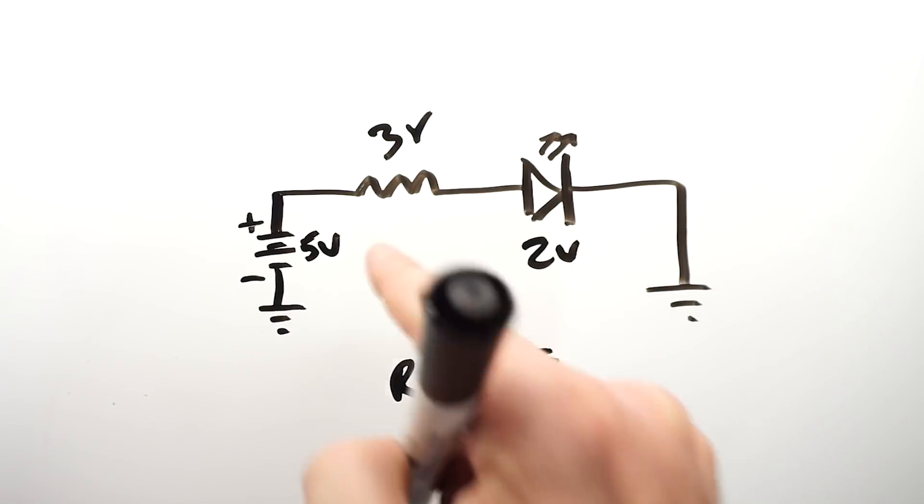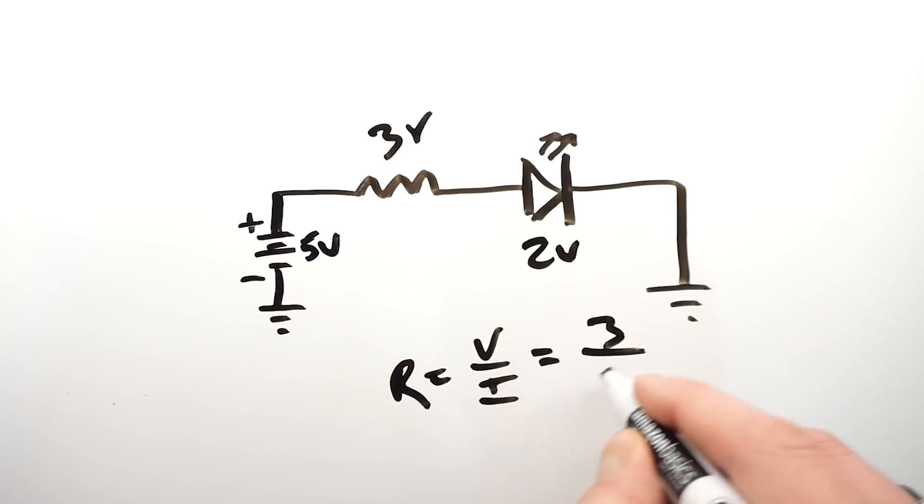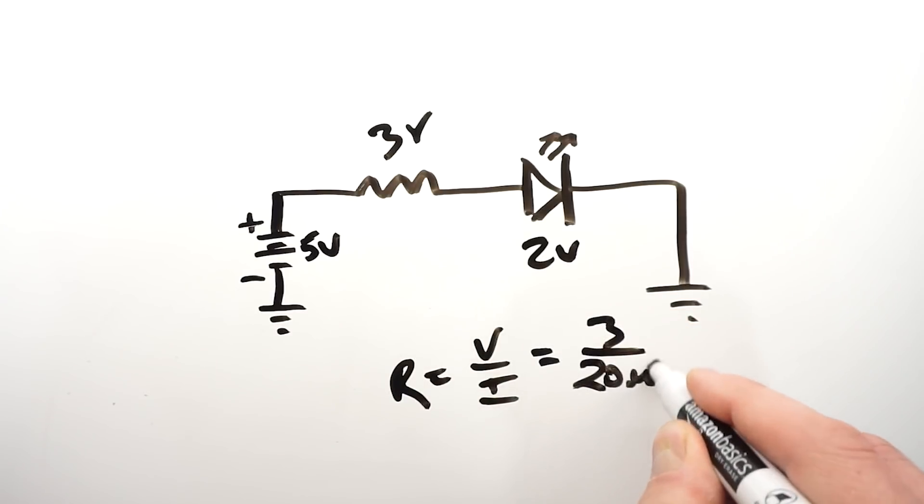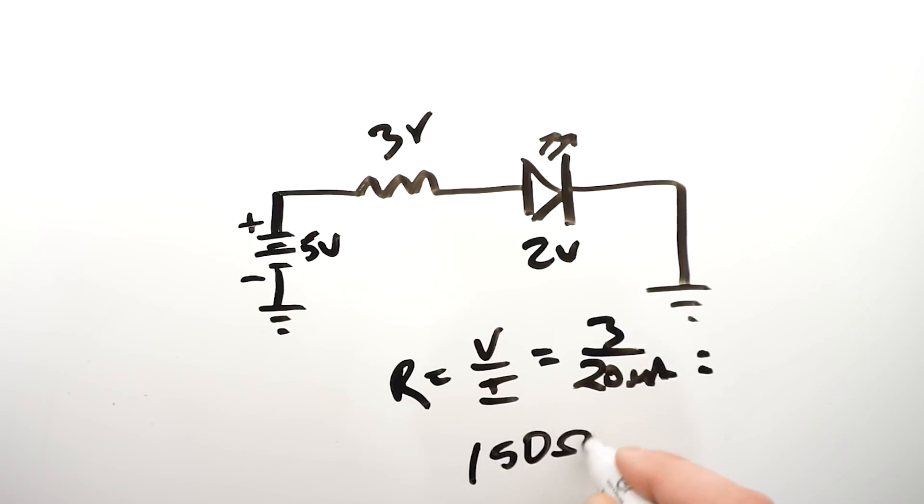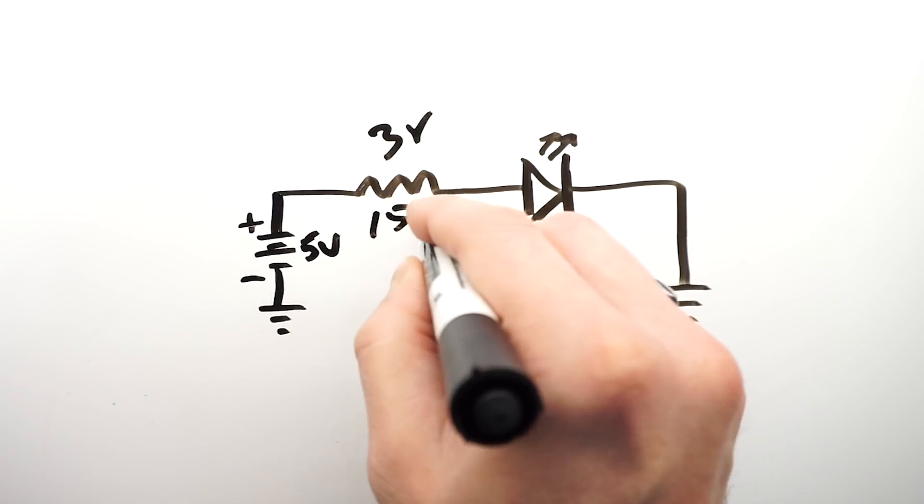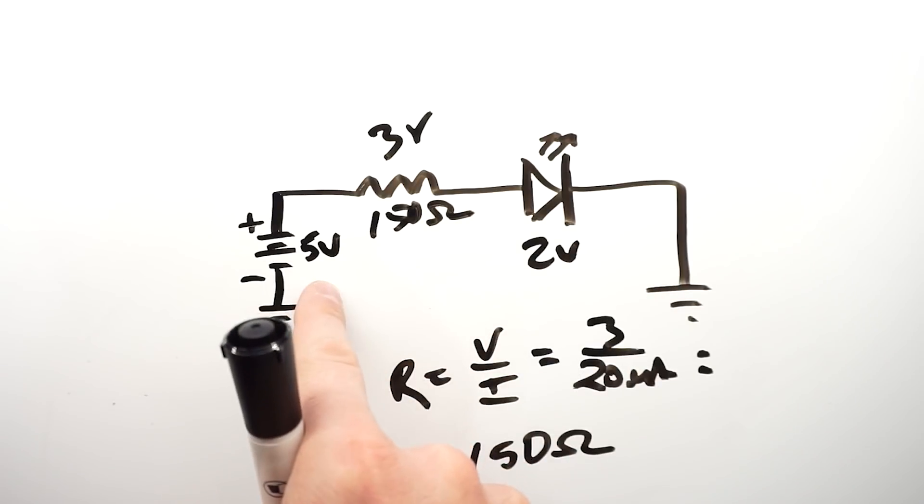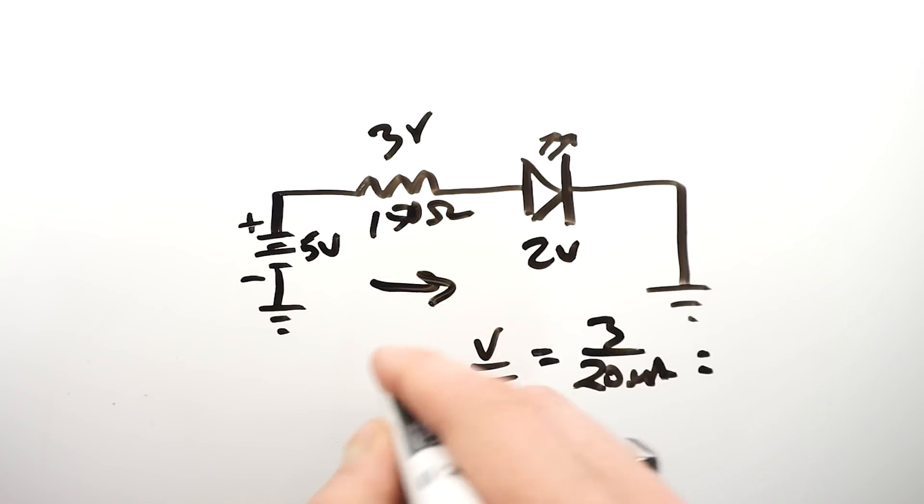To find the required resistor, which allows 20 milliamps of current to flow through the circuit, using Ohm's law, we say that resistance is equal to voltage divided by current. Substituting the voltage across the resistor, divided by our 20 milliamps we want, that is equal to 150 ohms. So this resistor needs to be 150 ohms with a five volts applied to provide 20 milliamps of current through the circuit.